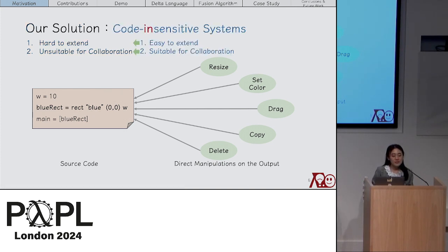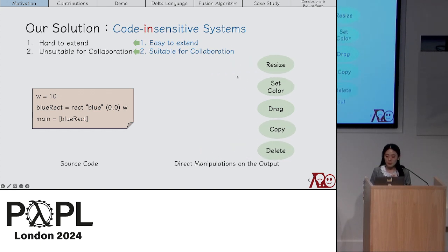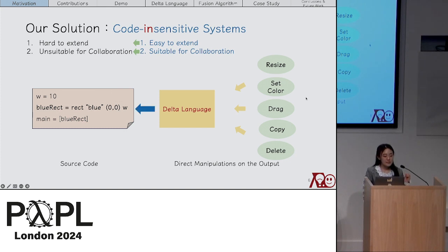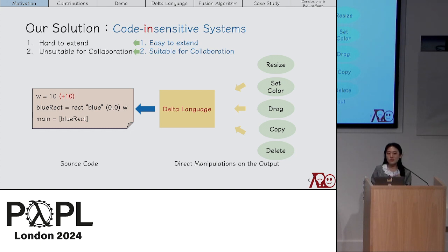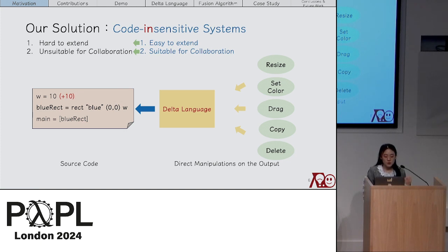Therefore, the goal is to separate direct manipulations from the source program. A delta language is designed to express direct manipulations, and a fusion operation propagates a delta written in that language into the proper position in the source program. This approach is code-insensitive: developers can extend with custom manipulations using the delta language without caring about program modifications. Additionally, direct manipulations are defined for output values rather than source programs, so UI designers can focus on visual output, enabling better programmer-designer collaboration.